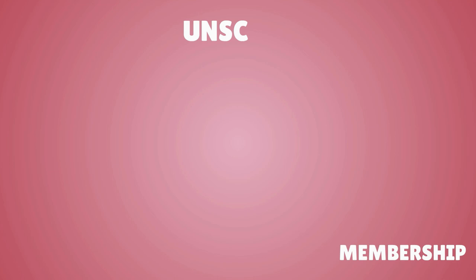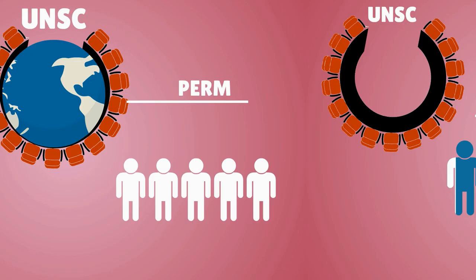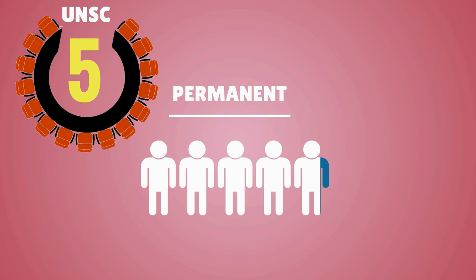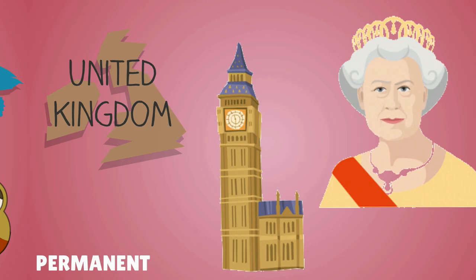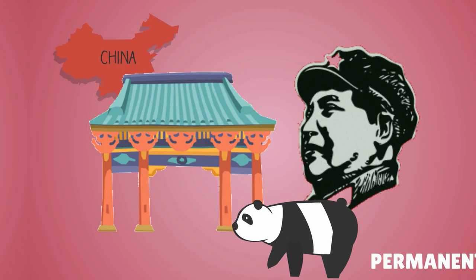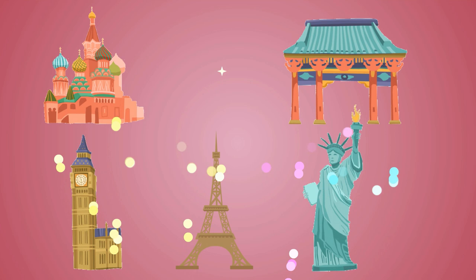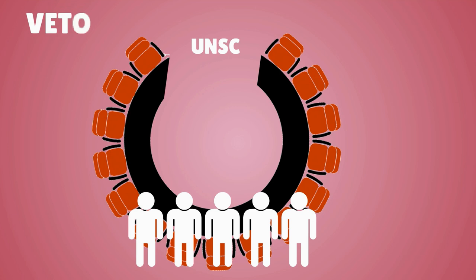maintain the peace and security of the international community. The council membership is limited to 15 states divided into two categories. The first category is the five permanent members: the Russian Federation, the United Kingdom, France, the People's Republic of China, and the United States of America, which represents the five great powers who won the Second